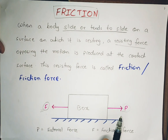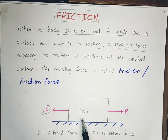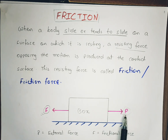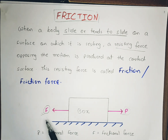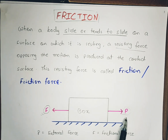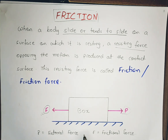Your box is the body we are talking about, and it is lying on the rough surface. By applying force initially the body will not move, but with increasing this force the box will eventually move. That is because of friction. At first the external force applied was very less, but with the increase in the external force the friction force will also increase, until the body starts to move.